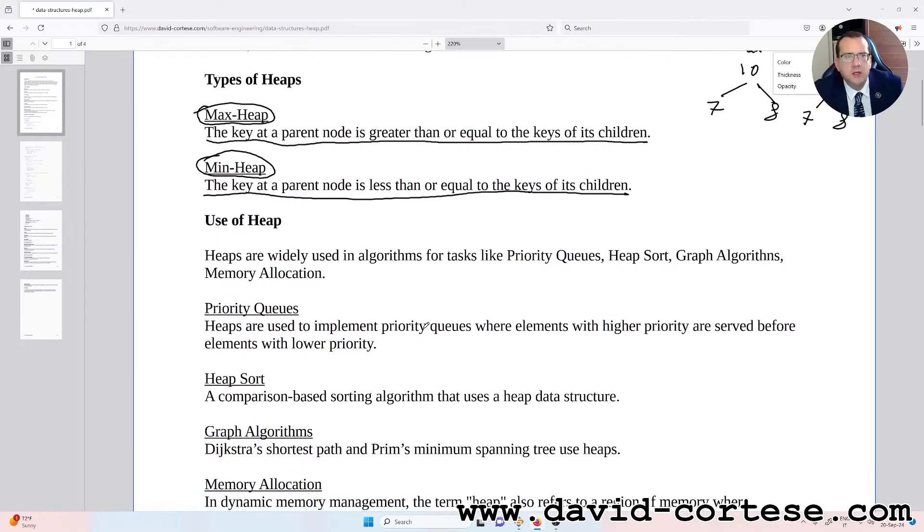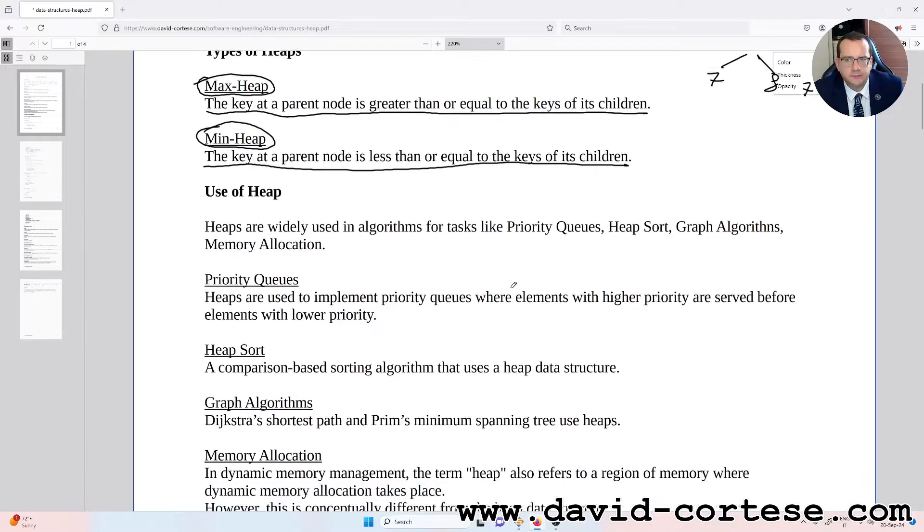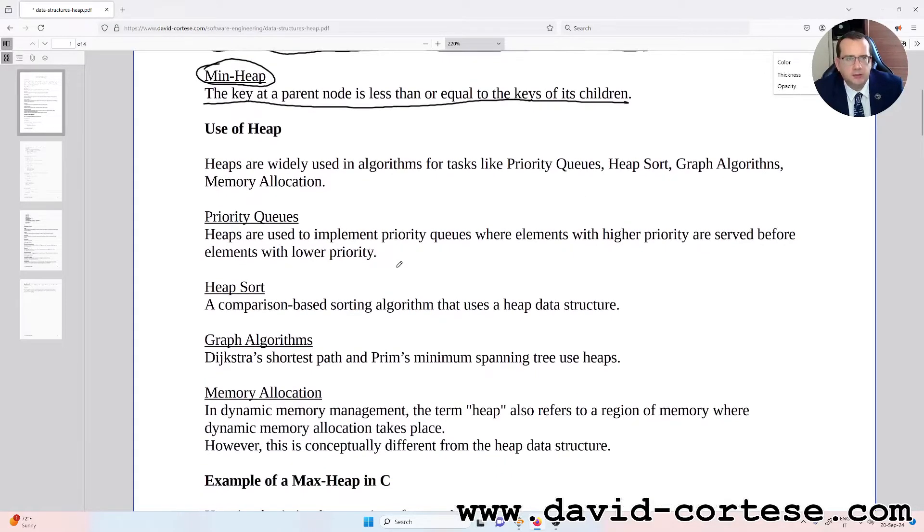Use of heap: Heaps are widely used in algorithms for tasks like priority queues, heap sort, graph algorithms, and memory allocation. Priority queues: heaps are used to implement priority queues where elements with higher priority are served before elements with lower priority.